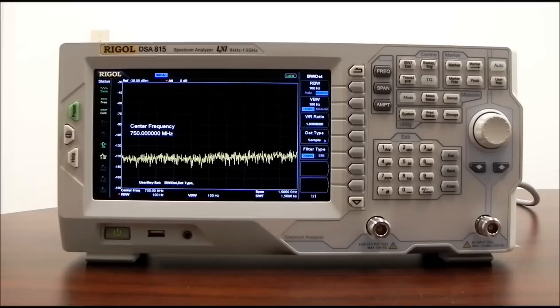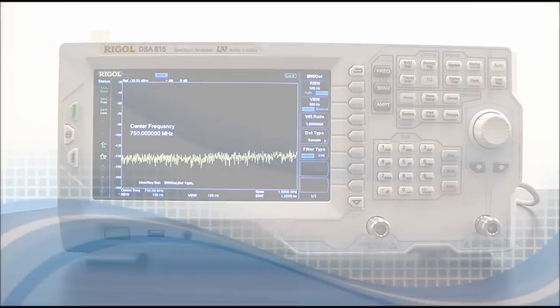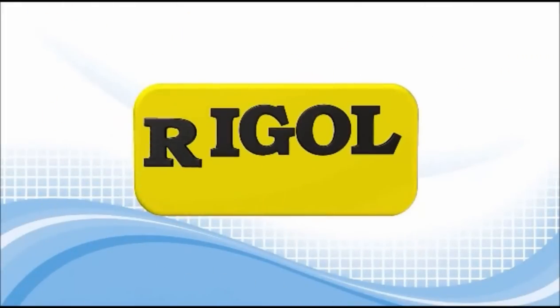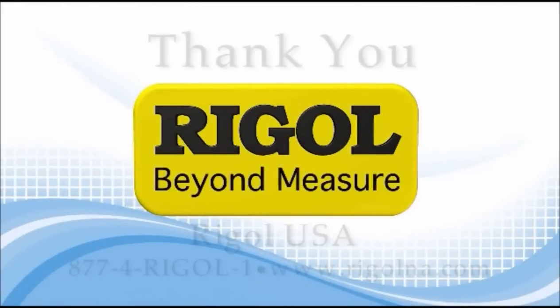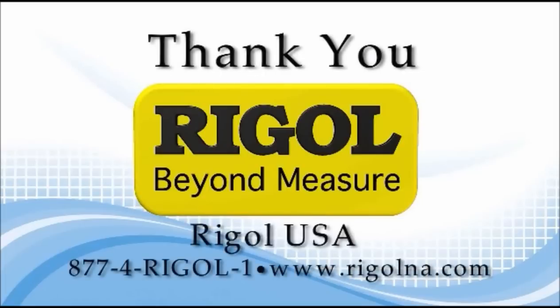Some hardware options that are available. Tracking generator. That's a factory installed option, so you do need to order that at the time of purchase. And then we also have a GPIB to USB converter if your application requires that. Thank you very much. I hope that you found this tour to be helpful. And if you have any questions, you can always give us a call or drop us an email. Thank you very much. Take care. Have a great day.